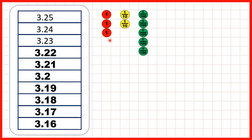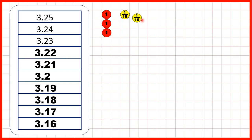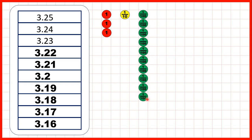Again, we can use place value counters to see what's happening. We start with 3.25, so that's three wholes, two-tenths, and five-hundredths. We're counting back in hundredths, so when we get to 3.2, we have three wholes and two-tenths. But to count back in hundredths, we need to take one of our tenths counters and exchange it for ten-hundredths counters. Then we can keep on counting back in hundredths until we get to 3.16, or three wholes, one-tenth, and six-hundredths.